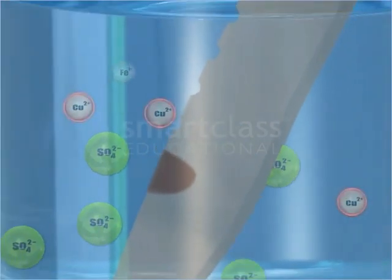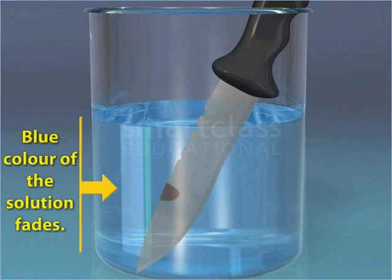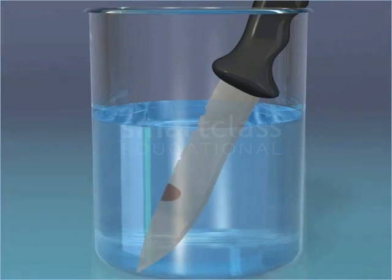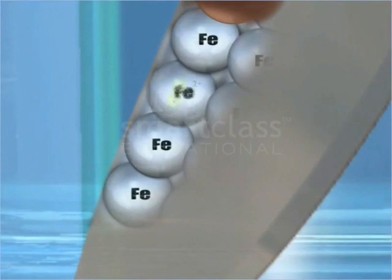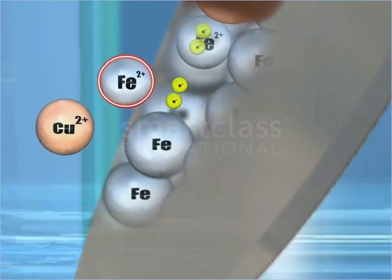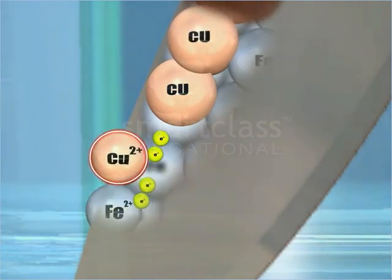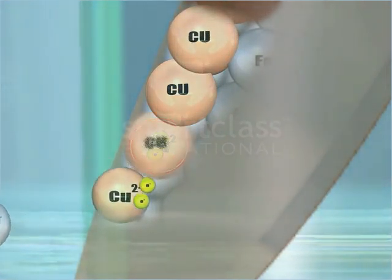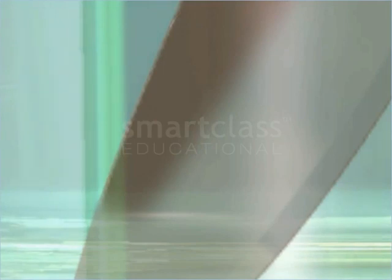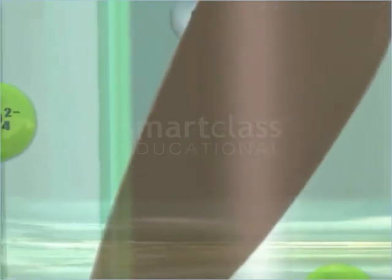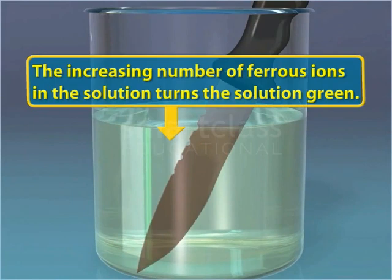Thus, as the number of copper ions in the solution decreases, the blue color of the solution fades. With time, more and more ferrous ions are formed and pass into the solution. At the same time, more and more copper ions change to copper atoms and deposit on the knife. The copper deposit is seen as a reddish-brown layer on the knife, whereas the increasing number of ferrous ions in the solution turns the solution green.